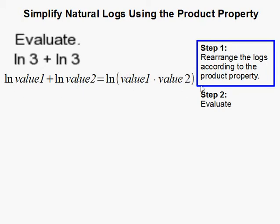And here is the property here. It looks kind of complicated, but it's actually super simple. All it says is, if you have two natural logs that you're adding, what you can do is you can turn it into one natural log, then you just multiply the two values here. Very easy.